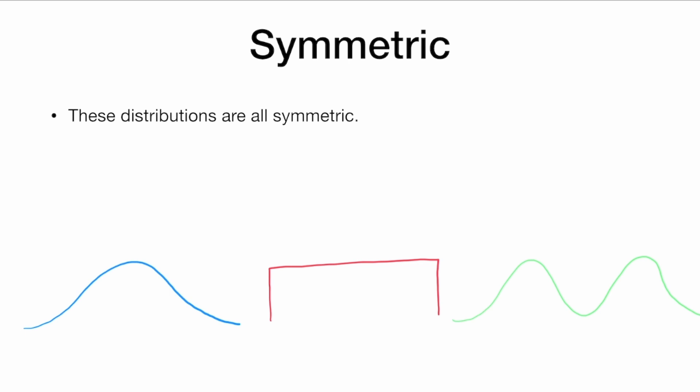So to start, these distributions are symmetric. We can draw a line through the middle and they are mirror images of each other. That's what it means to be symmetric.